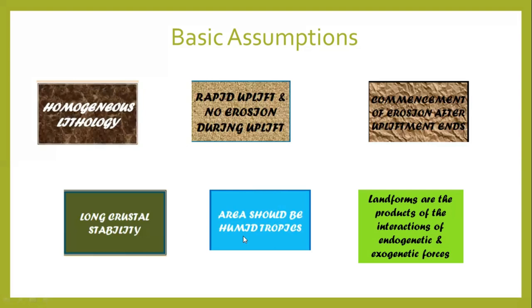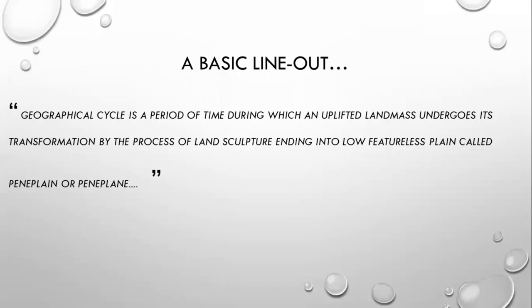The fifth assumption is that the area should be in humid tropics. For the cycle of erosion to function, the area must have fluvial characteristics — there must be many rivers covering the whole land, because those rivers will act as the major exogenetic forces. The sixth assumption is that landforms are products of interactions of endogenetic and exogenetic forces. Endogenetic forces are diastrophic forces occurring within the Earth's surface, while exogenetic forces occur above the Earth's surface — denudational agents like groundwater, sea waves, glaciers, periglacial processes, etc.